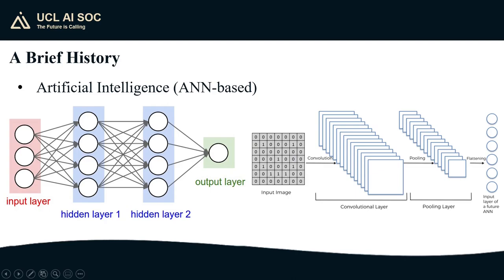On the right, we can see what is called a convolutional neural network, which is inspired by how the brain processes visual signals.